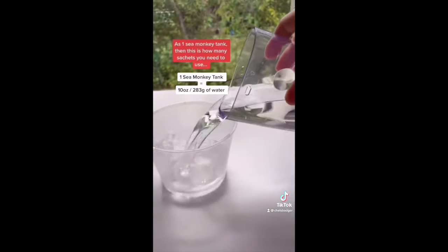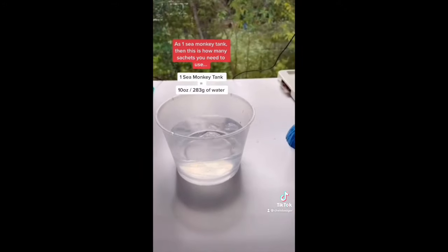So now that you've picked a tank you need to figure out your measurements. There is a science to growing sea monkeys so this part is super important. If your new tank can hold the same amount of water as one sea monkey tank, then this is how many sachets you need to use.